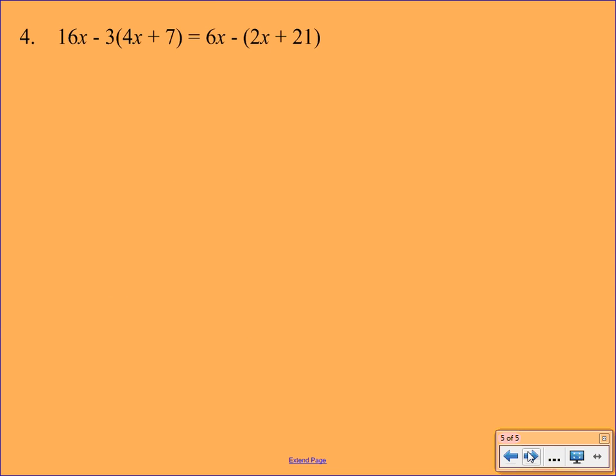Alright, our last example here. We will be distributing. We will be combining like terms. We've got a lot of stuff going on here. So first, drop down your 16x. And make sure that you notice that negative sign goes with the 3. So you're actually distributing in negative 3. So we've got minus 12x minus 21. On the right-hand side, the 6x is going to drop down. And you put in that 1 there because you will be distributing the negative 1. So now we have minus 2x minus 21.